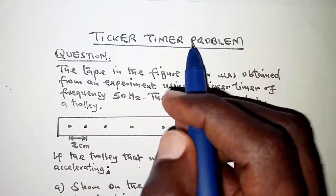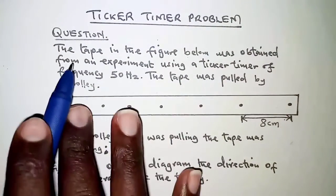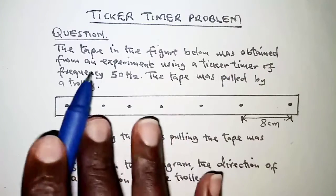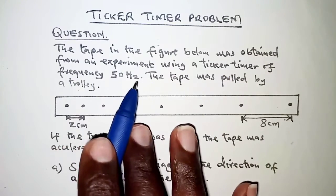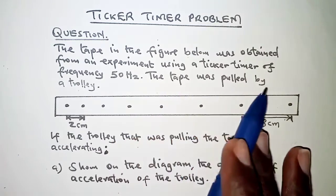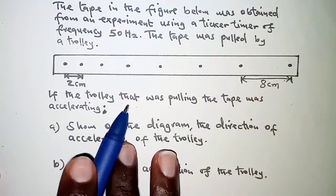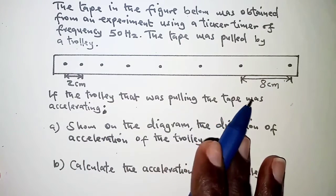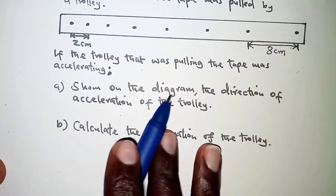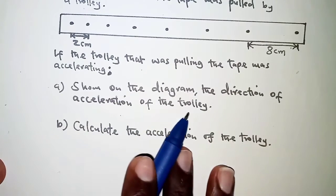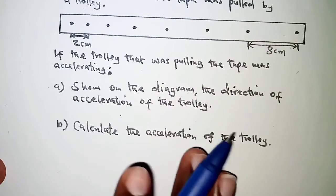Today we have a ticker timer problem. The question reads: the tape in the figure below was obtained from an experiment using a ticker timer of frequency 50 hertz. The tape was pulled by a trolley, as shown in the diagram. If the trolley pulling the tape was accelerating, part a: show on the diagram the direction of acceleration of the trolley, and part b: calculate the acceleration of the trolley.